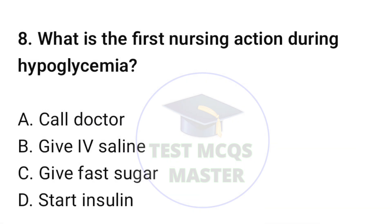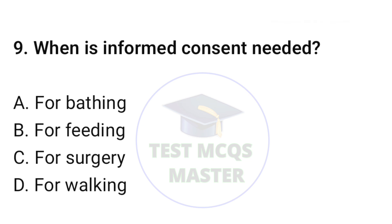Question number eight: What is the first nursing action during hypoglycemia? The correct option is C: give fast sugar. Question number nine: When is informed consent needed? The correct option is C: for surgery.